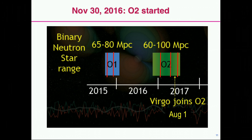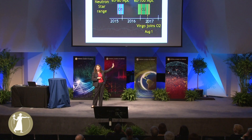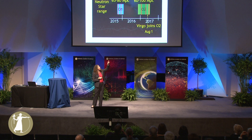On August 14 last year, we saw another coalescence of black holes, but this one was very different because it had three detectors. With three detectors we can triangulate. We had been sending alerts to astronomers — with two detectors you cannot localize well, but here we could tell them exactly where to look. Nothing was seen, and we were not surprised because these are black holes — black meaning they don't emit light.